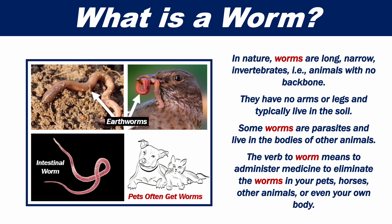In nature, worms are long, narrow invertebrates — that is, animals with no backbone. They have no arms or legs and typically live in the soil. Some worms are parasites and live in the bodies of other animals.